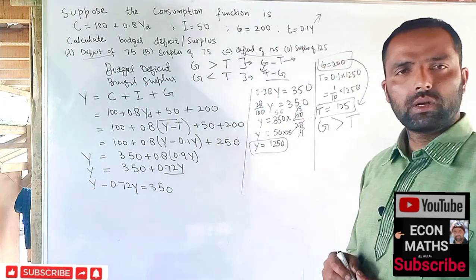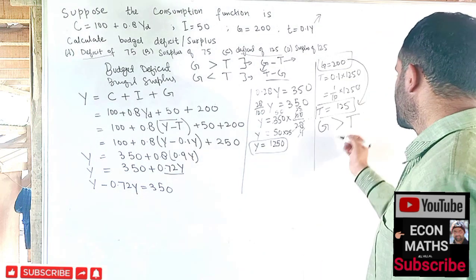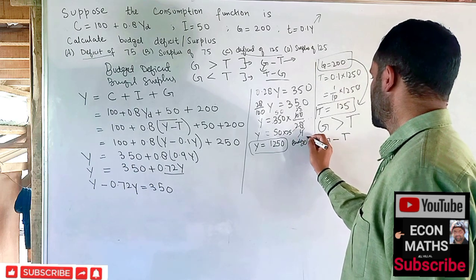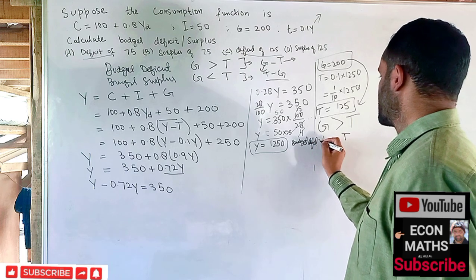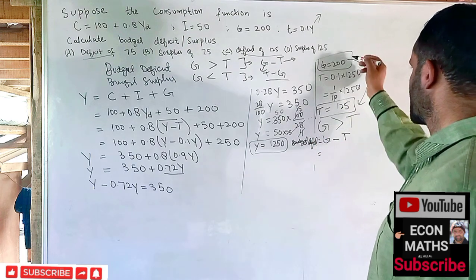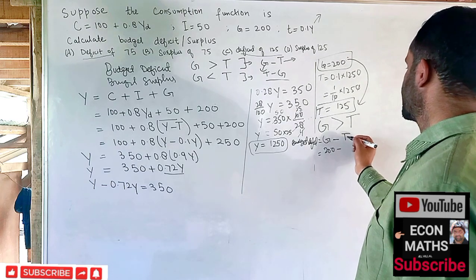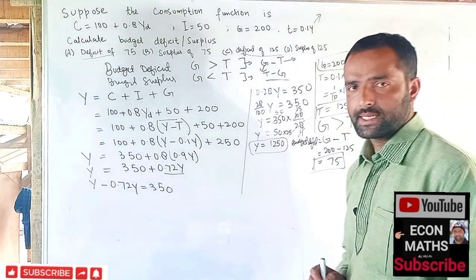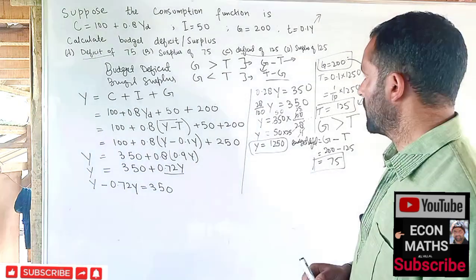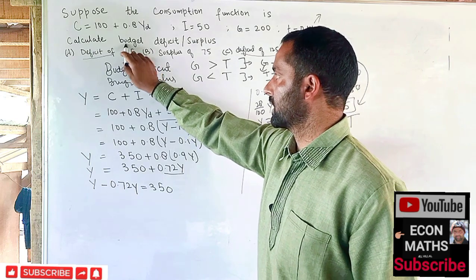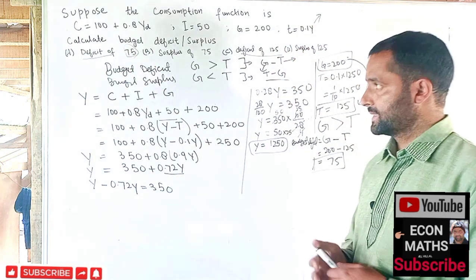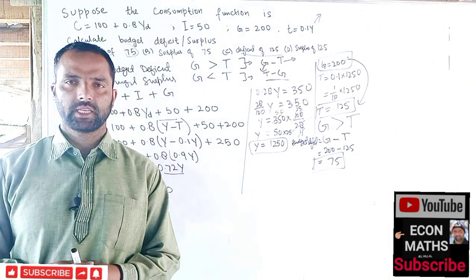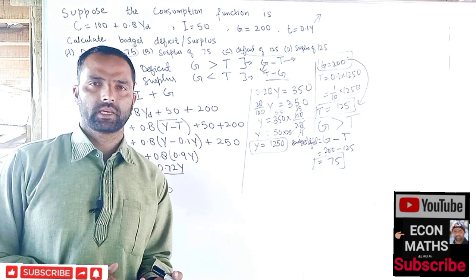To calculate the magnitude of the budget deficit, we compute G − T = 200 − 125 = 75. So the correct answer is a deficit of 75, which is the first option. I hope I made myself clear in this video. Thank you. If you like these videos, please subscribe and share so that I get inspired to make more videos on mathematical economics.